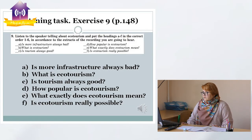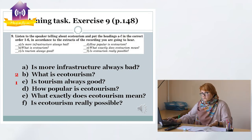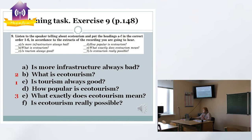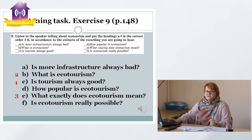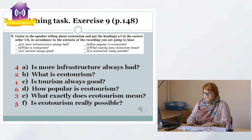Are you ready to check? I think we should start with the most common question: C) Is tourism always good? What is the next sentence? To my mind it should be sentence B) What is ecotourism? — because if we're going to speak about it, we should give a definition first. The third is E) What exactly does ecotourism mean? — because the speaker tried to explain different aspects. Then number 4 in my list is letter A, then letter F, and finally number 6 is letter D. If you have the same answers, that means we think in the same way.